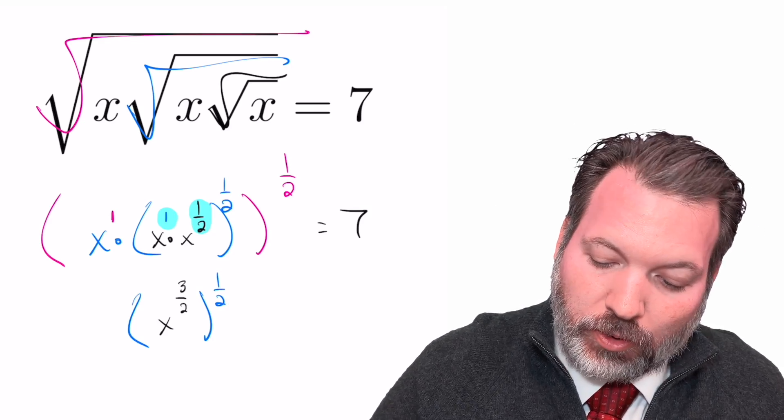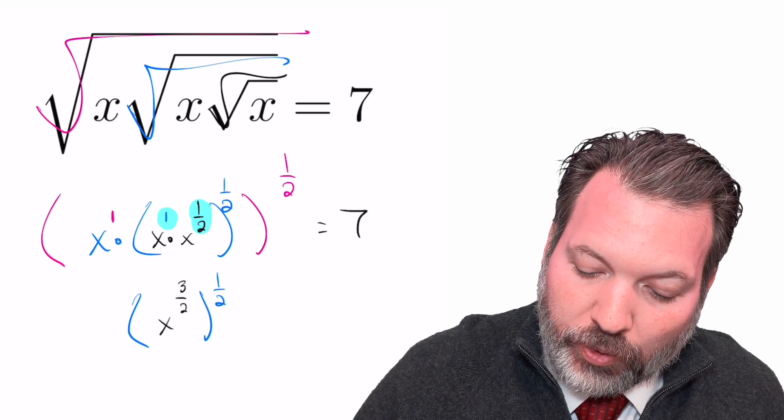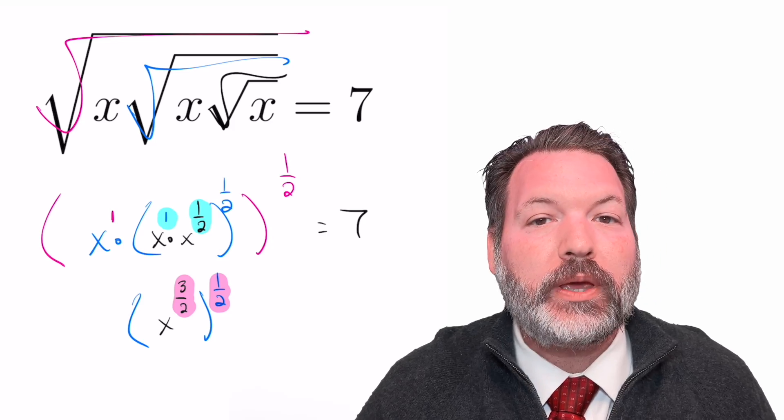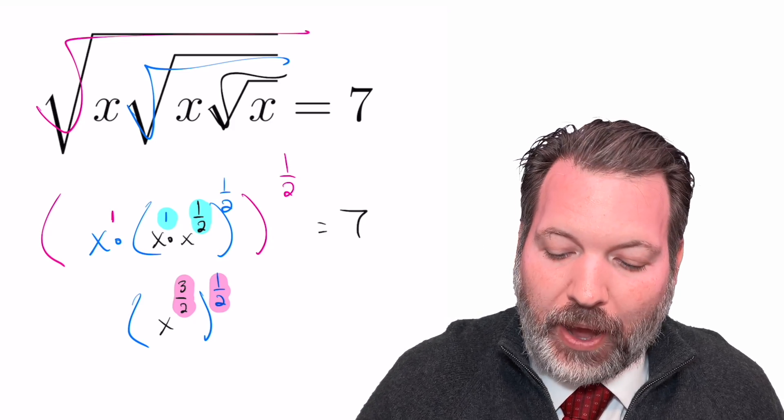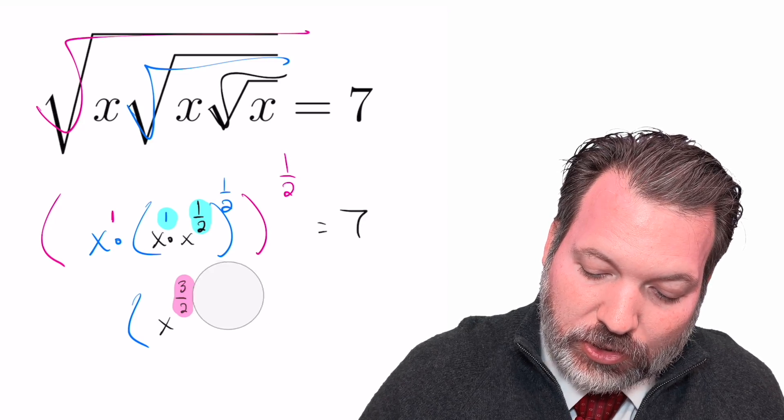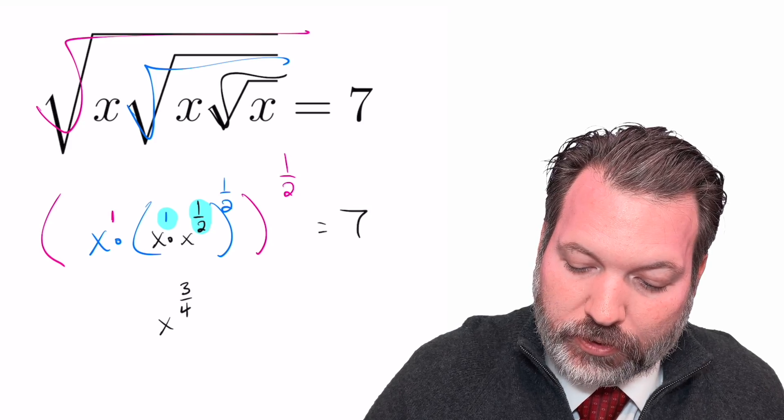Now that itself was being raised to the one half power, and I'm going to apply a second exponent rule. When we raise a power to another power, we multiply those powers. So x to the three halves to the one half power is the same thing as x to the three fourths power. Three halves times one half is three fourths.